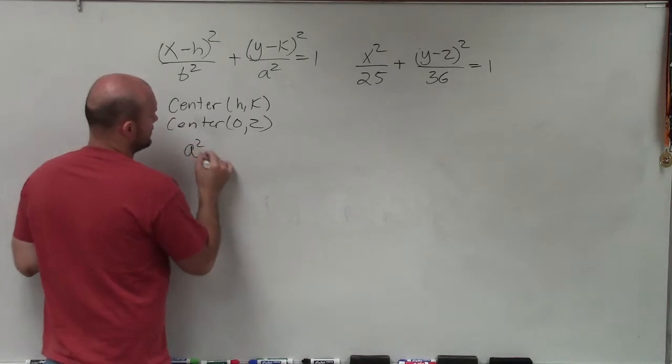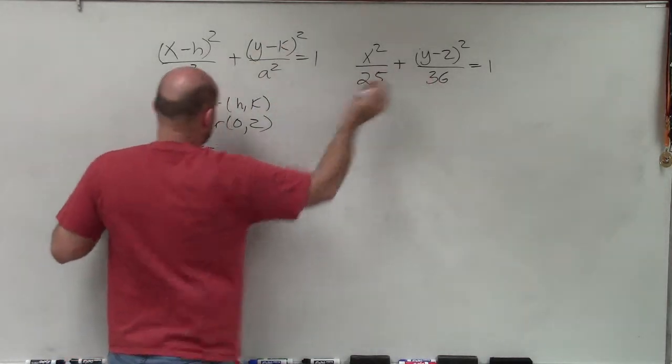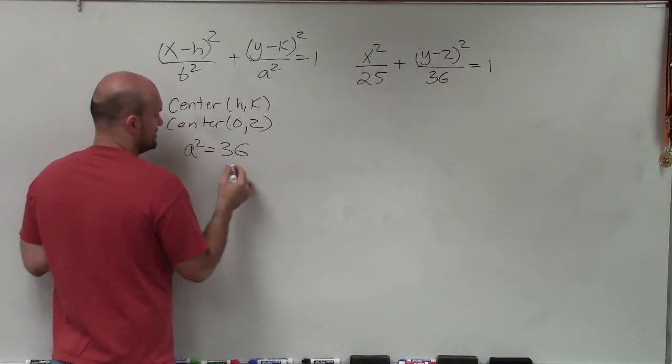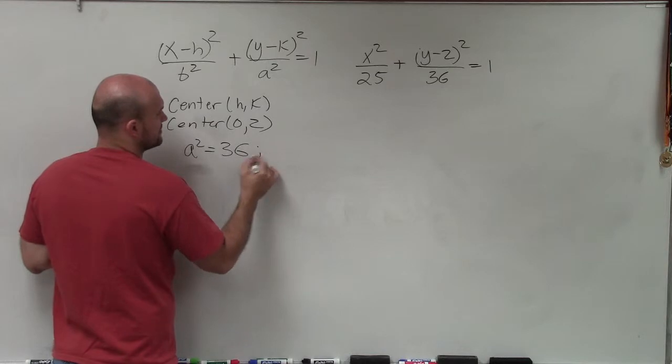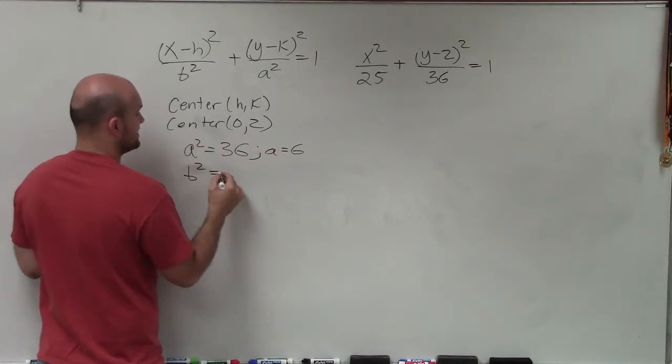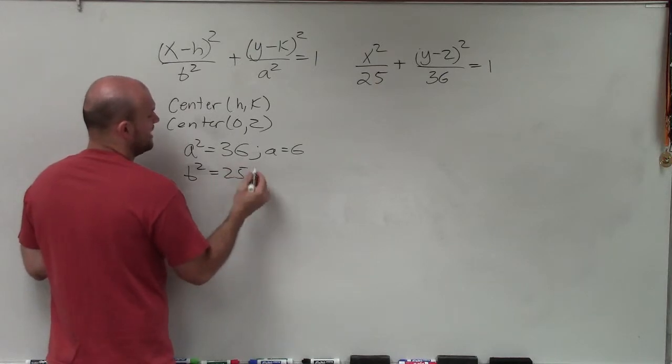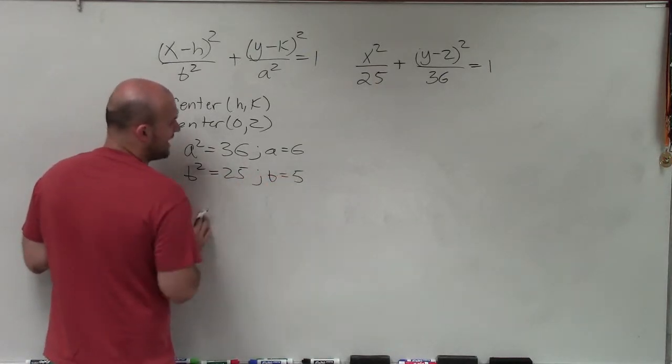Now I need to determine what my a squared is. Well, since we know that the a squared is under the y, I can say that a squared equals 36. So therefore, taking the square root of both sides, I have a equals 6. Then b squared is going to be equal to 25. And therefore, b equals 5.